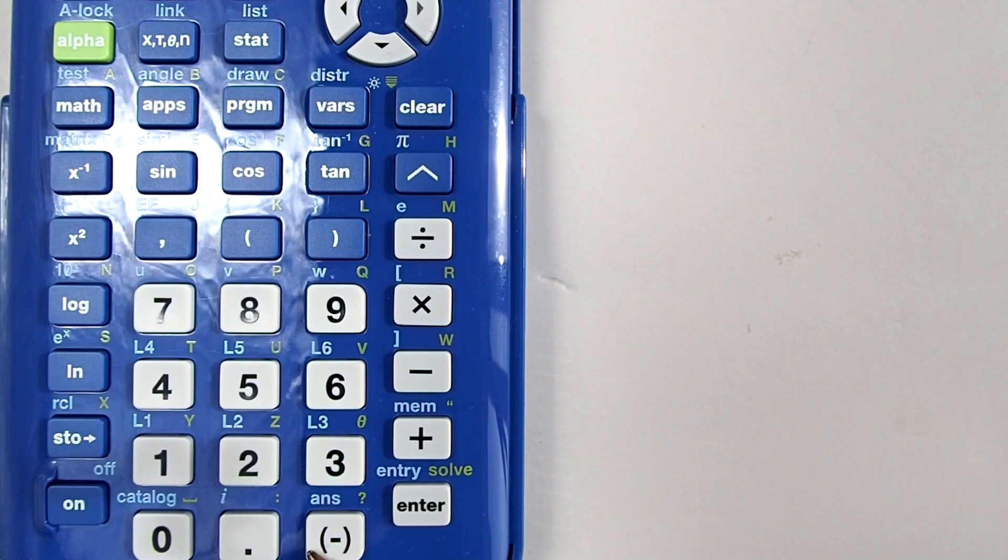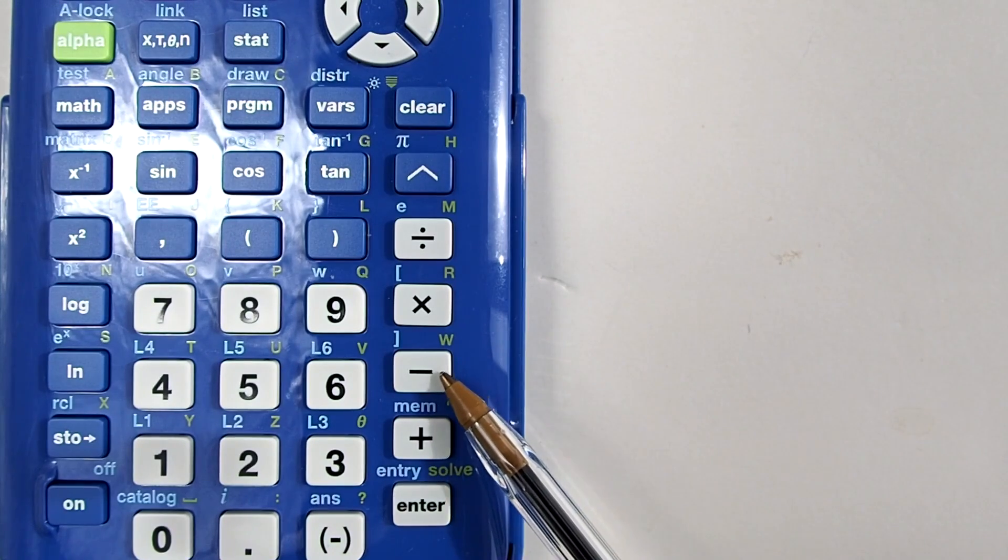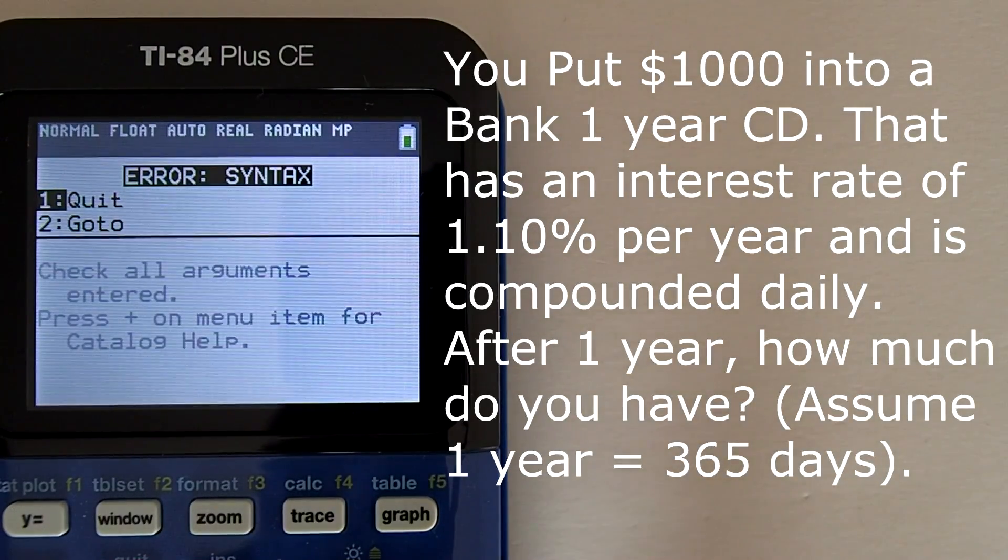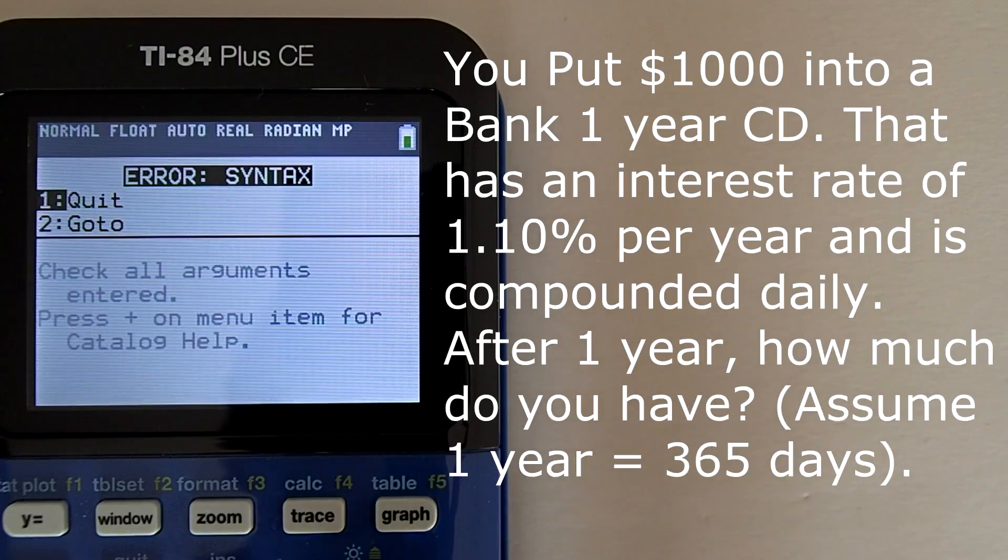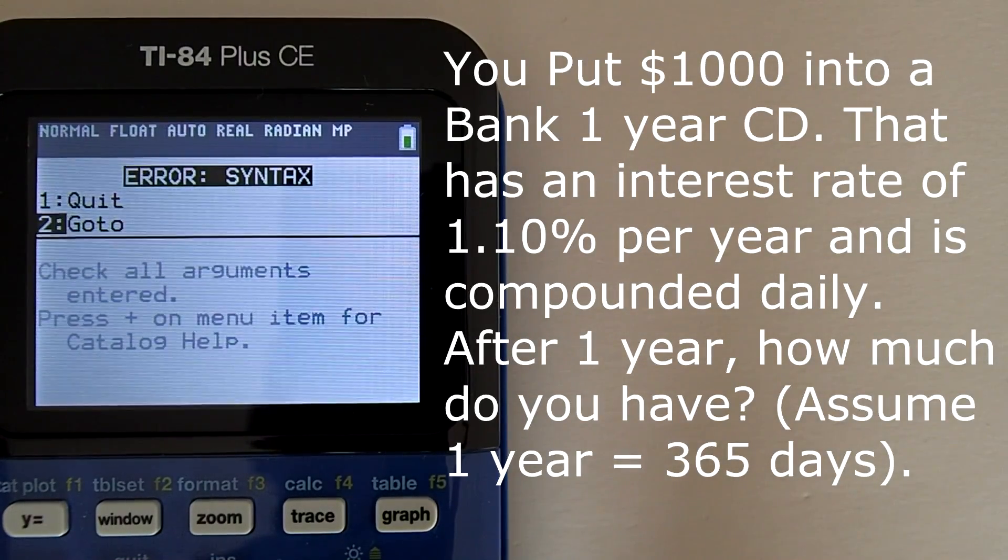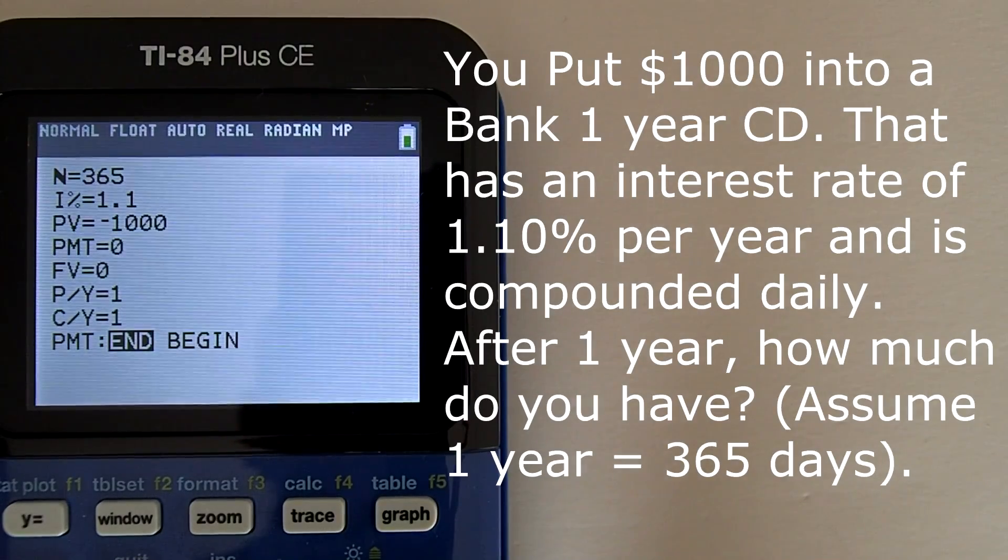Remember, use the negative key here to enter a negative 1,000. Do not use the minus key. If you use the minus key, this is the error message you will receive: Error, syntax. To go back to the time value of money app, select number 2, go to, and change that minus sign to a negative sign. Negative because we are taking money out of our pocket to fund this account.